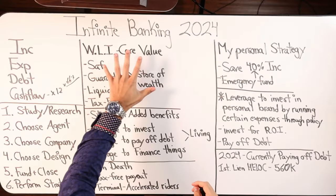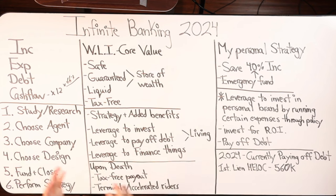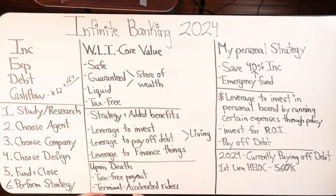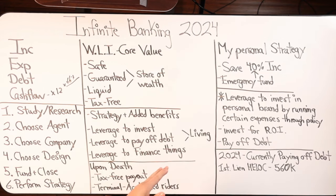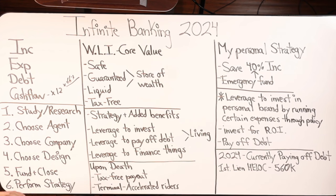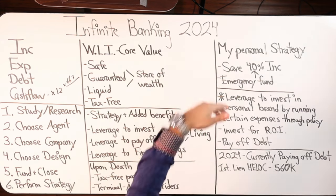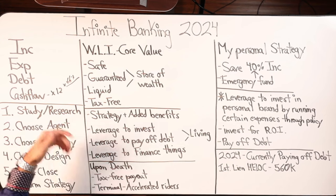Core value — very, very key. Now my process through the documents — I have this whole six-step strategy. I've got prior videos in my playlist to really equip you. So by the time you come to the table and talk to an agent, you'll tell them exactly what you want and what you need. You'll be fully prepared. Step one is study and research: watching videos like this, getting educated, taking a look at case studies, looking at other YouTube channels, reading articles, reading books — really put yourself through an education phase.